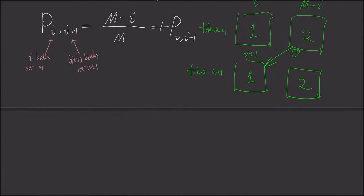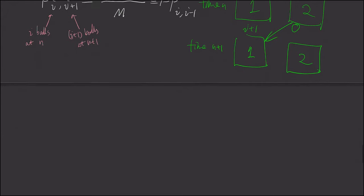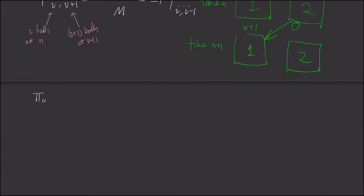Now using the equation in a previous video, we can solve for the stationary probability, which is pi zero. And it is, by the formula, it is this fraction.